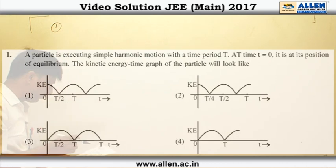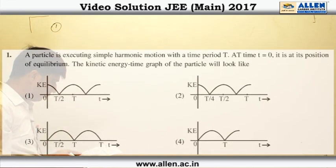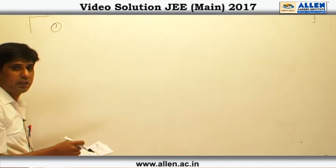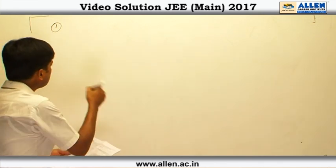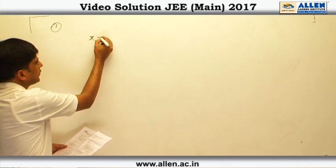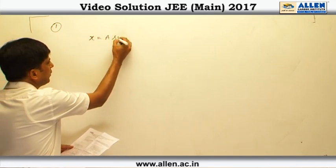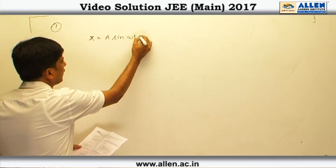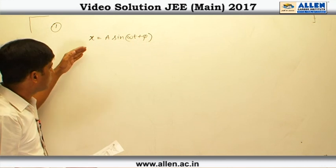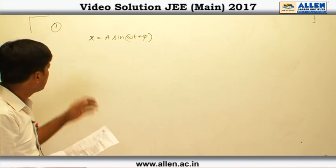In this question we are asked to draw a kinetic energy versus time graph of a particle performing SHM. Now consider a particle performing SHM along the x-axis whose equation must be given by x equals A sin omega t plus phi. To get the velocity of the particle we have to differentiate the position with respect to time.